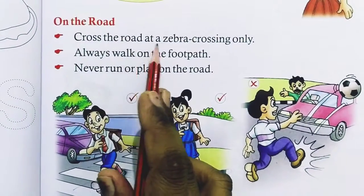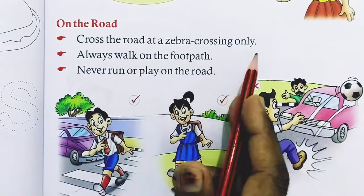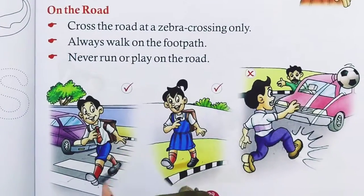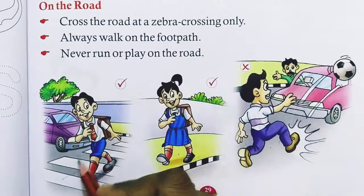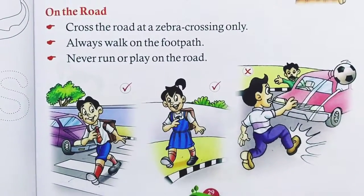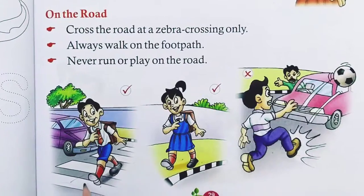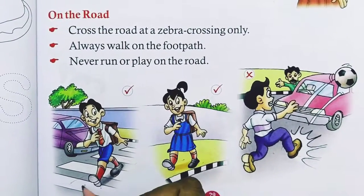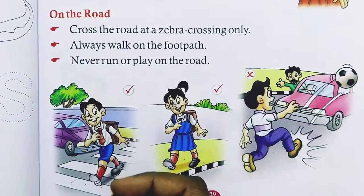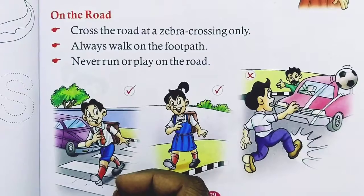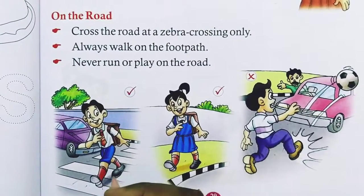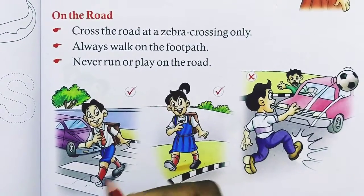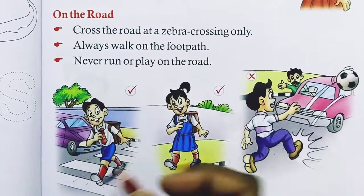Always cross the road at a zebra crossing only. This is why we call it a zebra crossing — because it looks like a zebra, with white and black stripes.